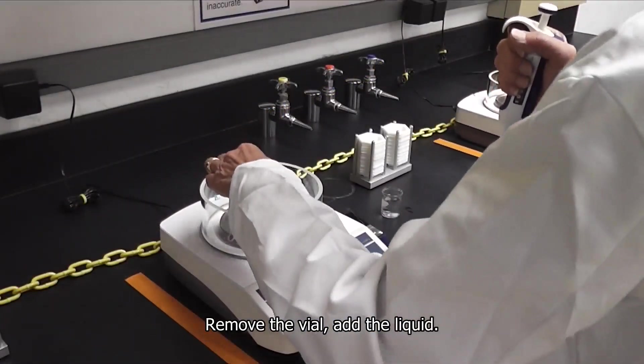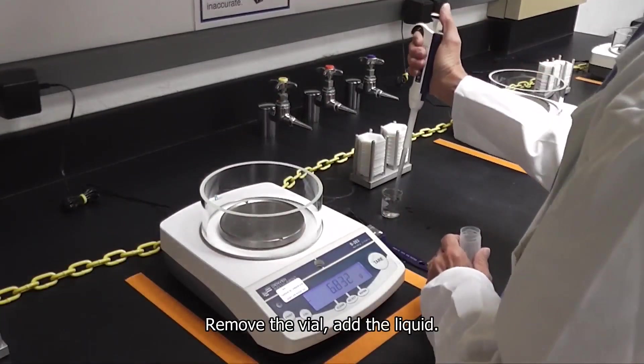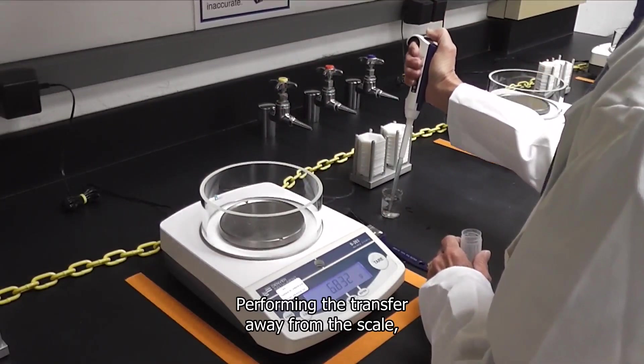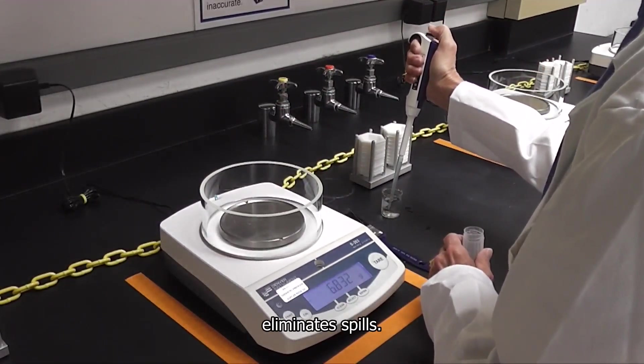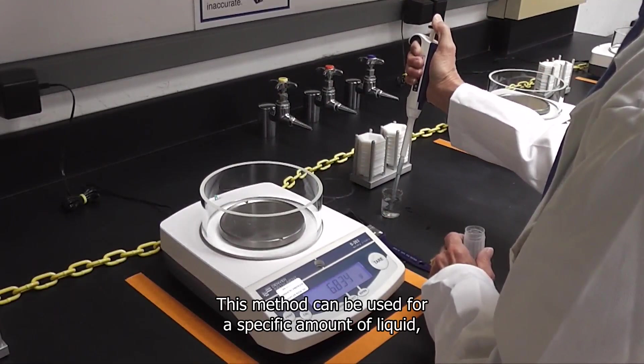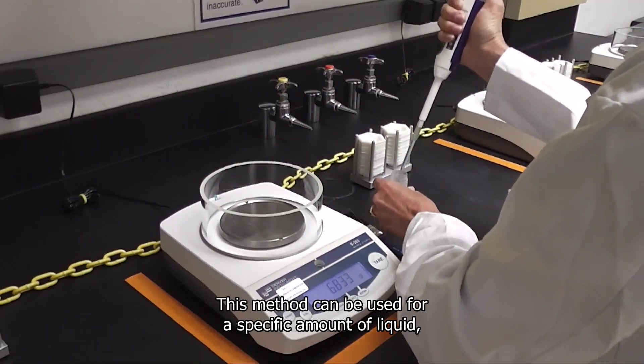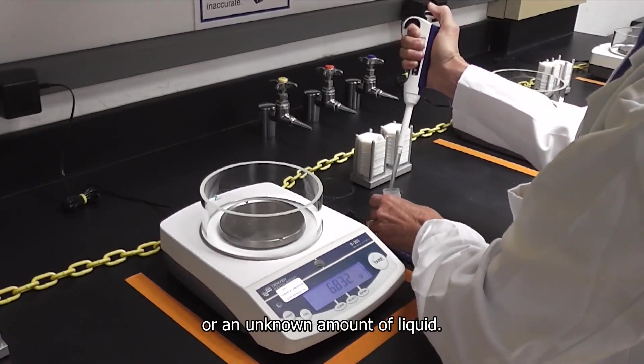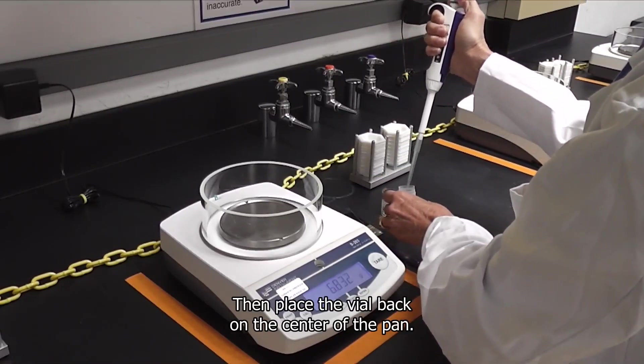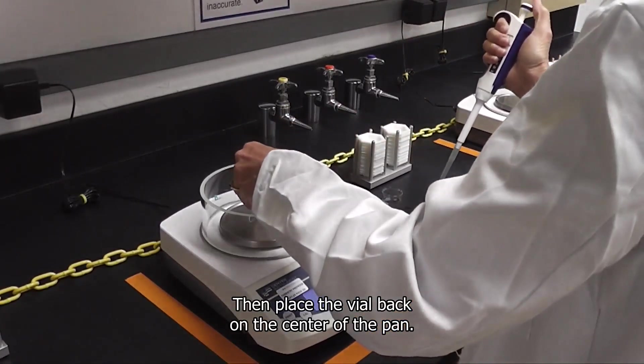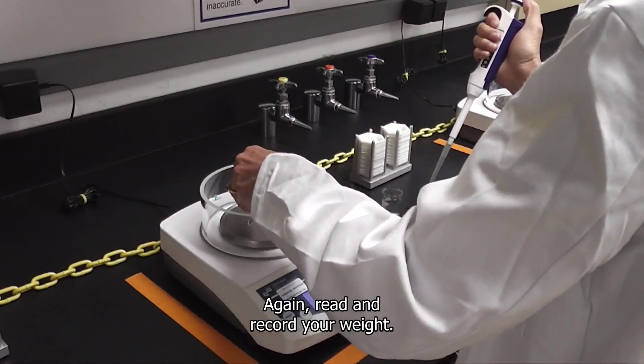Remove the vial, add the liquid. Performing the transfer away from the scale eliminates spills. This method can be used for a specific amount of liquid or an unknown amount of liquid. Then place the vial back on the center of the pan. Again, read and record your weight.